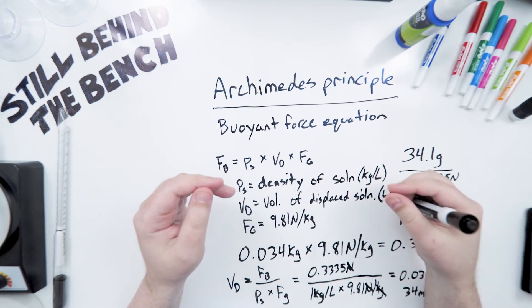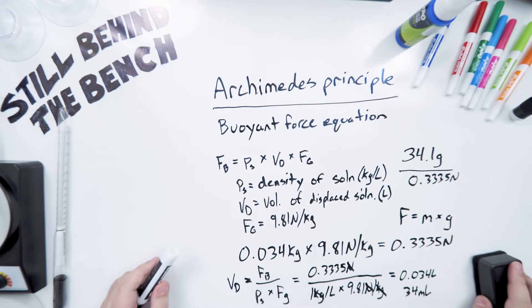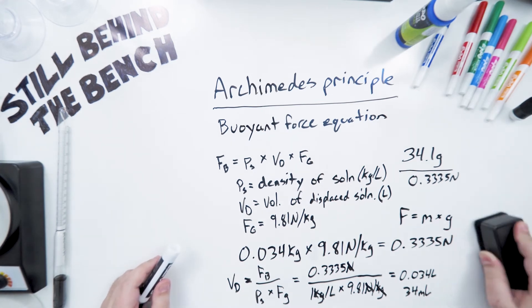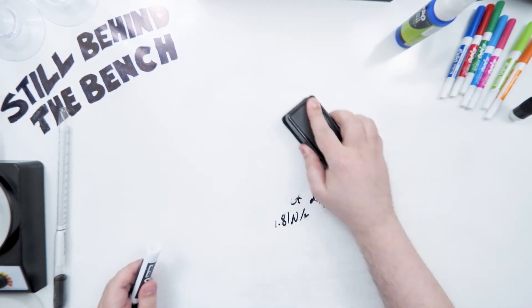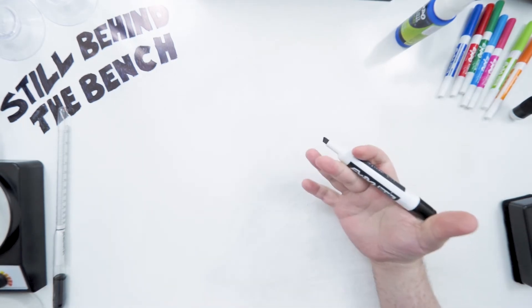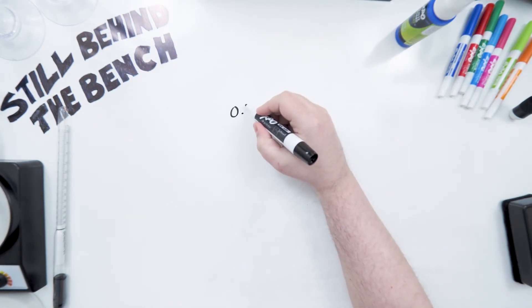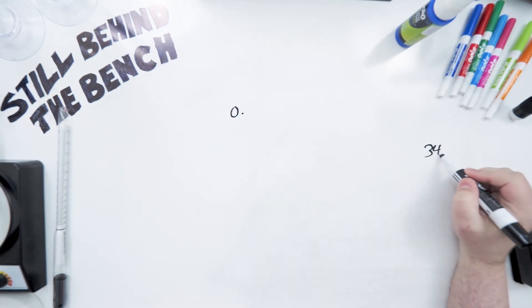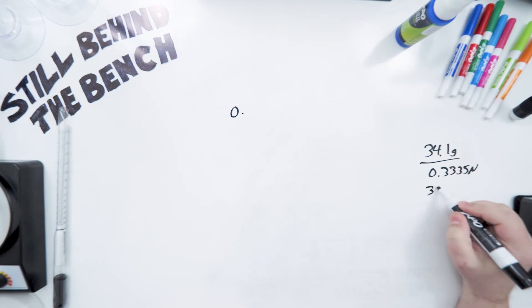So what affects density? Temperature and pressure do, although realistically pressure is not going to change enough for it to have any sort of real effect. Temperature, what kind of effect will it have? Well, I'll do that formula again. So we had 34.1 grams and 0.3335 newtons, and then the final answer was 34 milliliters.